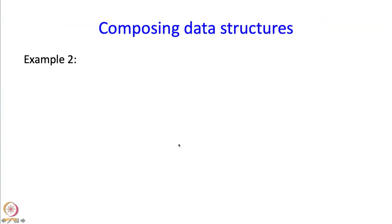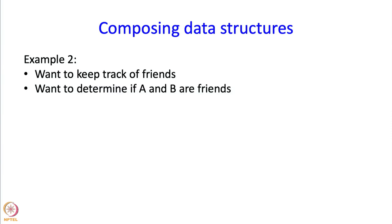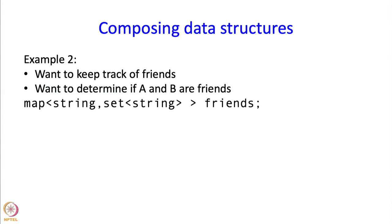Let me take another example. Again this is about keeping track of friends, but now I want to determine if A and B are friends — for example, if Dharmendra and Amitabh are friends or if Jitendra and Dharmendra are friends. I want a data structure which can quickly answer queries like this. Well, it turns out it is useful to use a map from string to a set of strings.